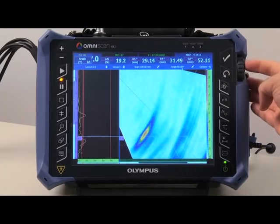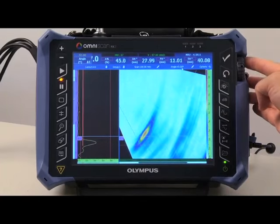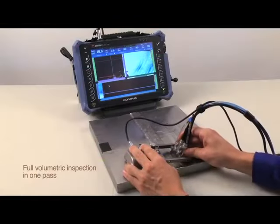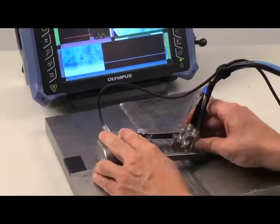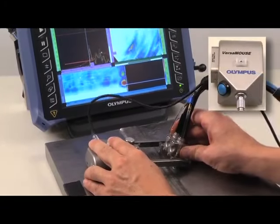In this example, programming a 30 to 80 degree longitudinal wave S-scan provides full volumetric inspection of the austenitic weld in one pass using the Olympus VersaMouse scanner.